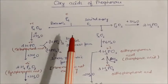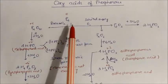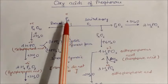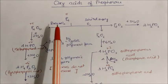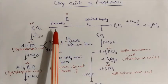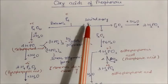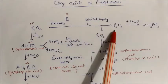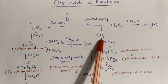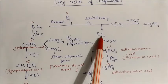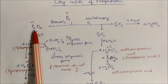First, take phosphorus — P₄ is the phosphorus molecule. If you give air or combustion with a limited supply of oxygen, two types of compounds are formed: one is P₂O₃ and the second is P₄O₆. If you give excess oxygen, it will form P₄O₁₀.